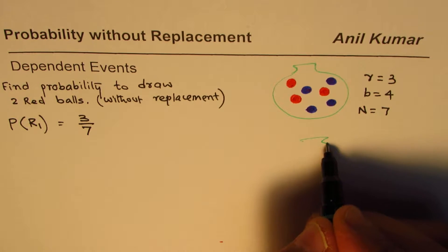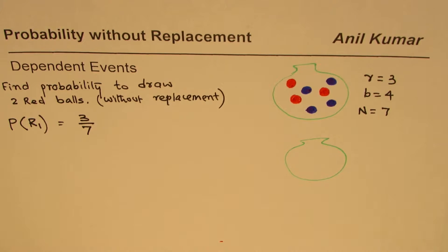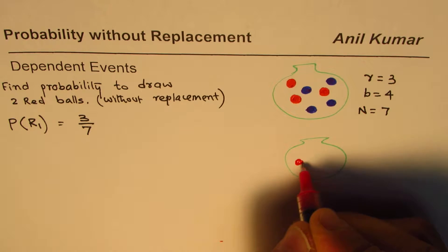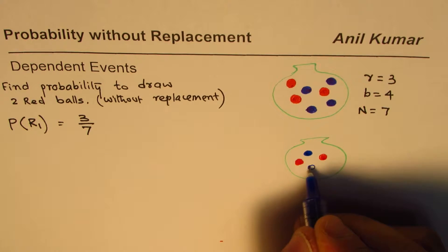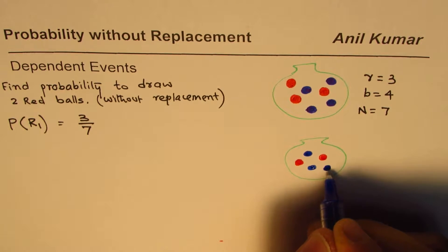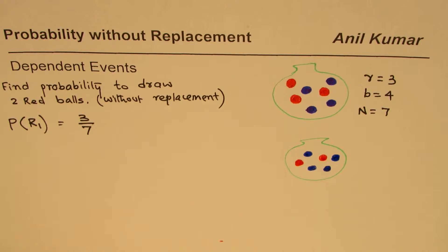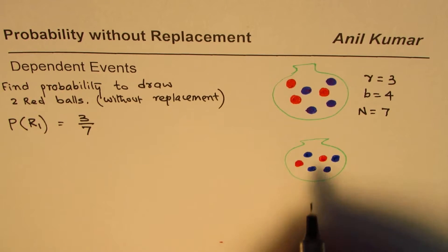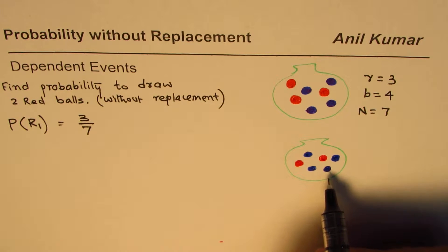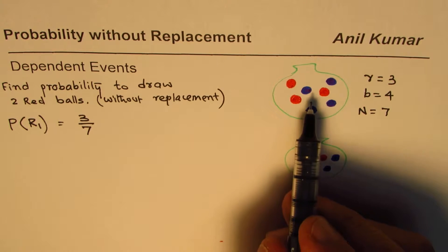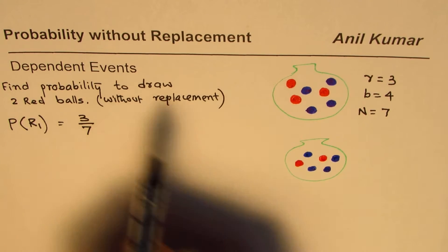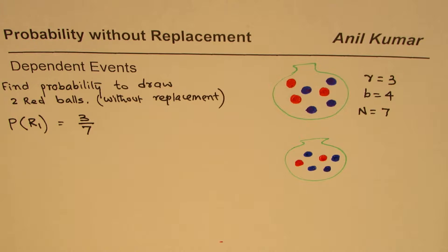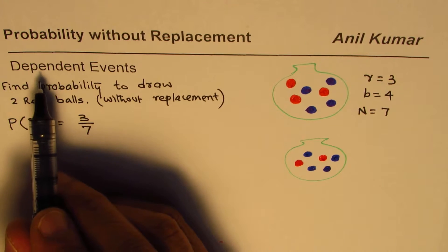Now if we remove the ball — suppose we picked a red ball — we are left with only two red balls, not three, since we already picked one. Now we have to pick the next red ball. Since the number of balls has decreased, the probability has changed. Since the probability has changed, we call this a dependent event — it really depends on what happened in the previous event.